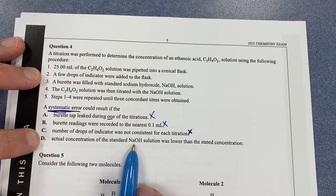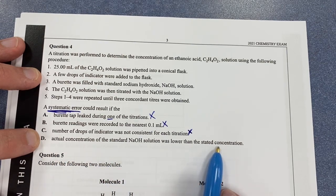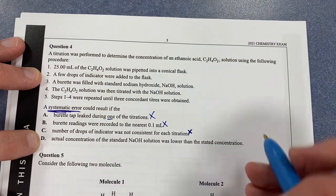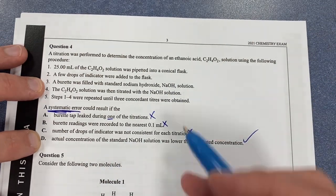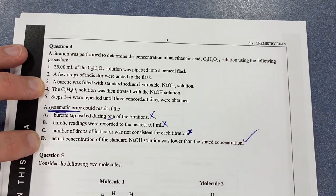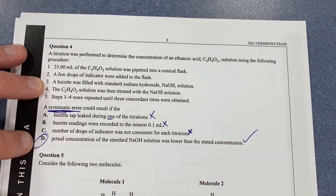The actual concentration of the standard NaOH solution was lower than the stated concentration. That seems more systematic because it would affect every titration that you do in the same way. So therefore, D is the right answer for question four.